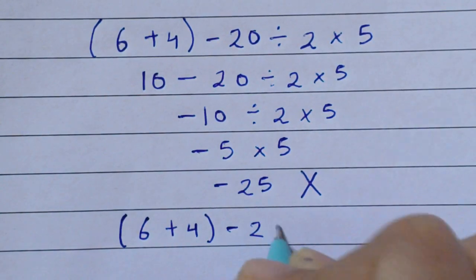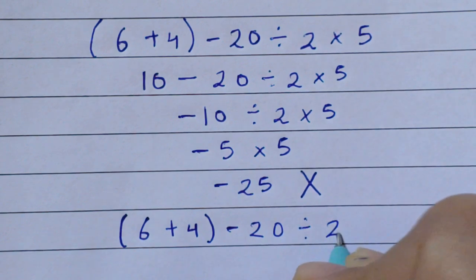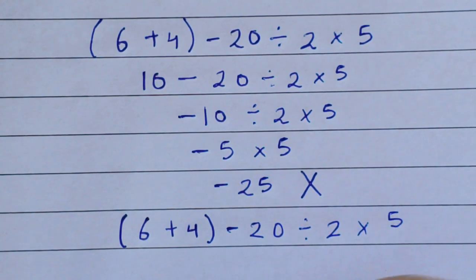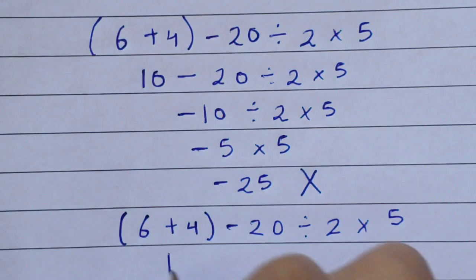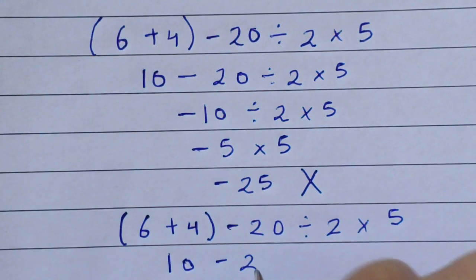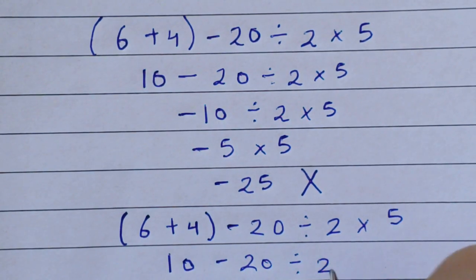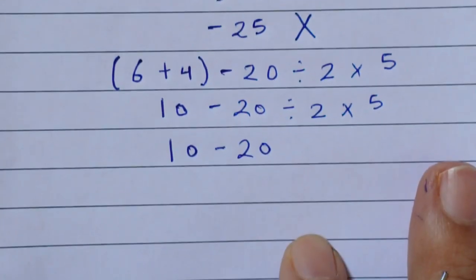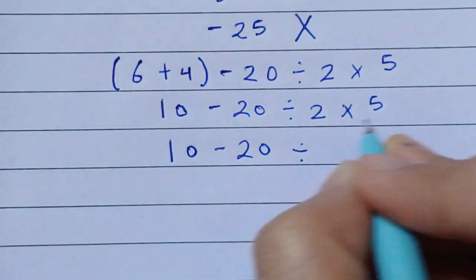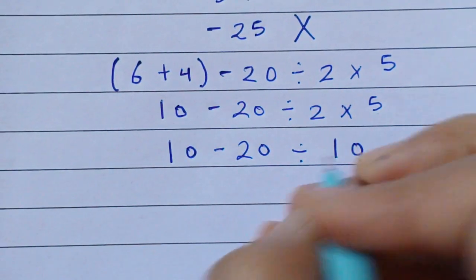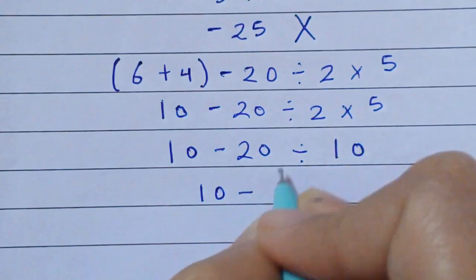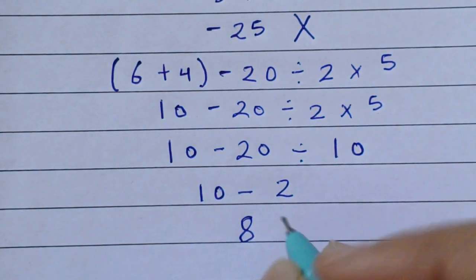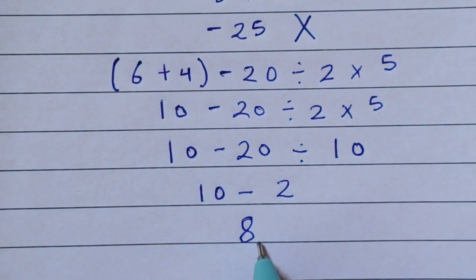Let's write the question once again: (6 + 4) minus 20 divided by 2 times 5. Here 6 plus 4 equals 10, minus 20 divided by 2 times 5. Then 10 minus 20 divided by 2 comes to 8. If you think 8 is the correct value, again you are wrong — this is also an incorrect value for this expression.